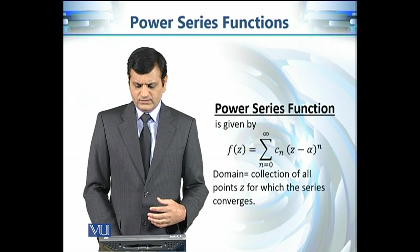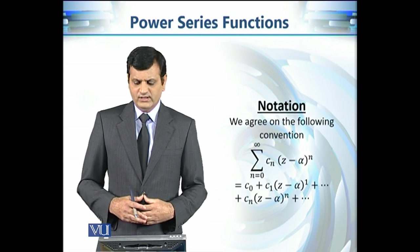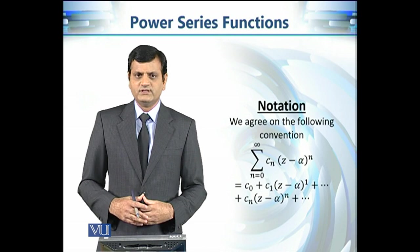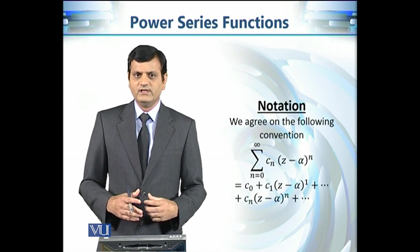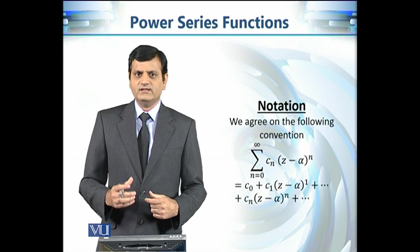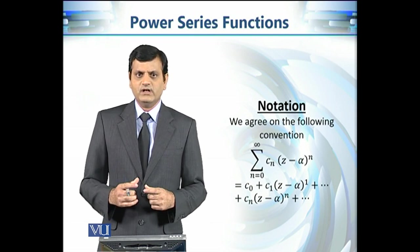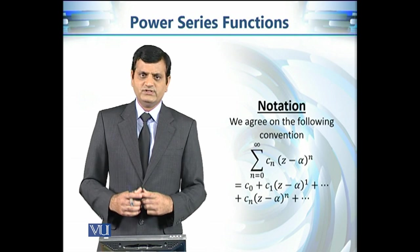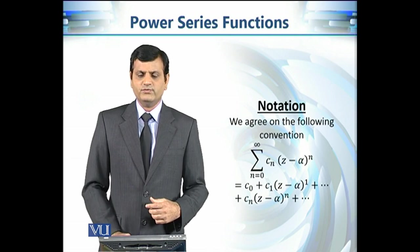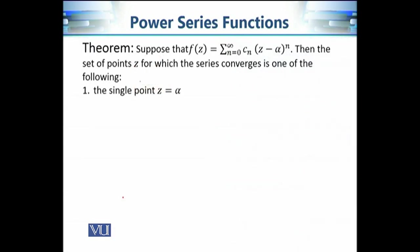There is also a simple notation related to this expression. Instead of taking the first term to be C_0 times (Z minus alpha) raised to power zero, we take the first term to be C_0, because it avoids the situation of zero raised to power zero, which is an undefined expression. Now to calculate the domain of these complex valued functions we have our first result.